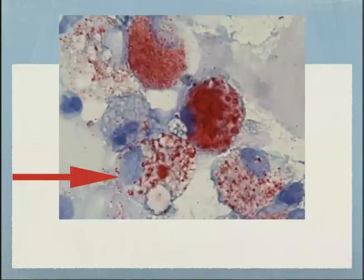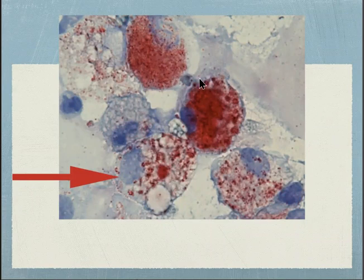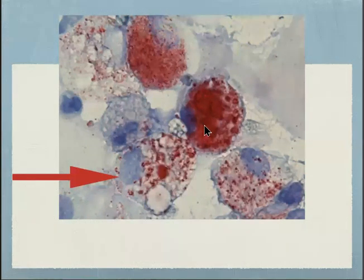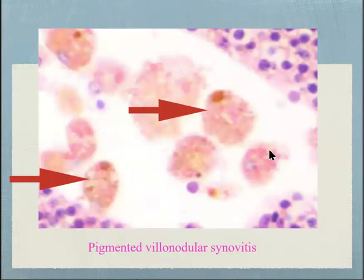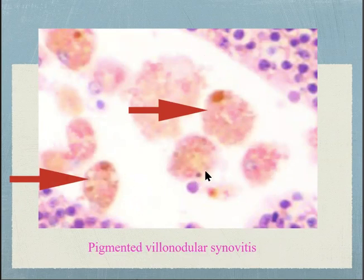Hemosiderin-laden macrophages may also be seen, as in pigmented villonodular synovitis — a disease that often shows this type of cell within the synovial fluid, with intense inflammatory reaction visible in the background.